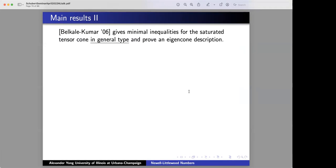He replaces it, at least in the classical groups, with just a condition on little Richardson coefficients. So we're using those sorts of results as part of our arguments. Now, what Belkale and Kumar do is they, in fact, give minimal inequalities for these saturated tensor cones in general, in absolute generality, and they also prove an eigencone description.